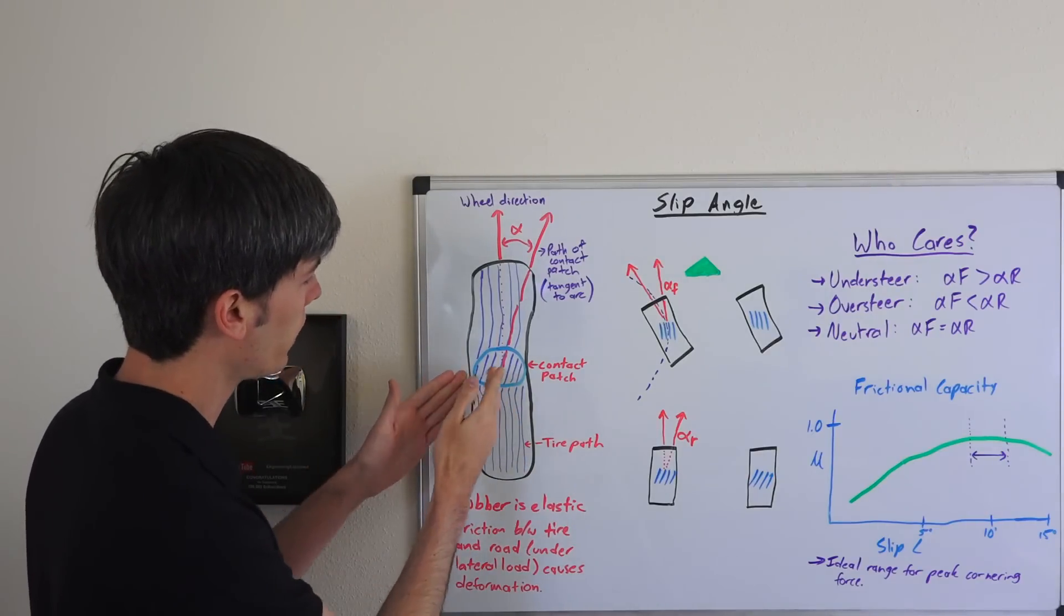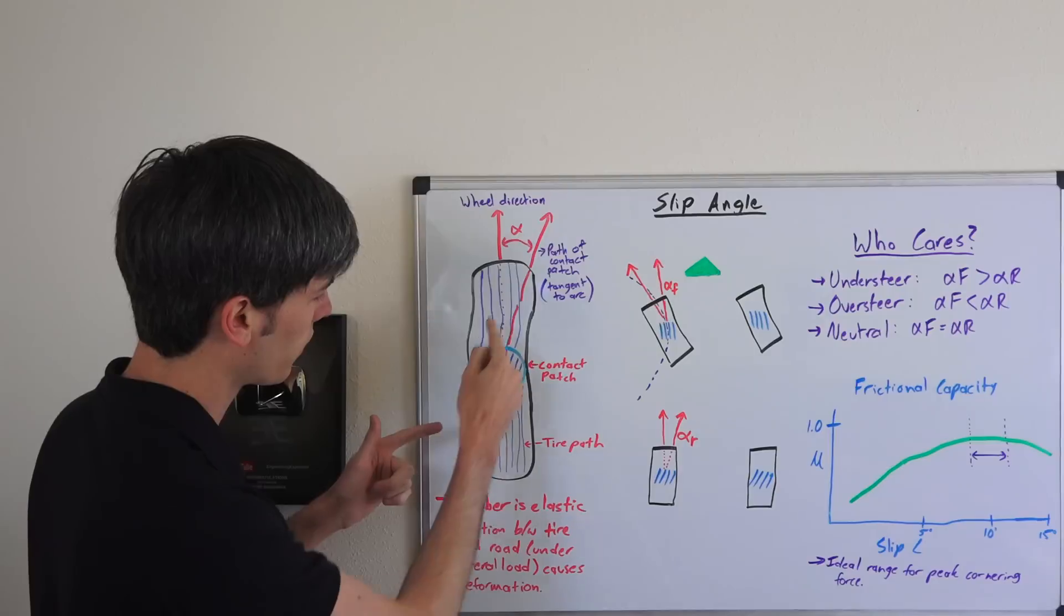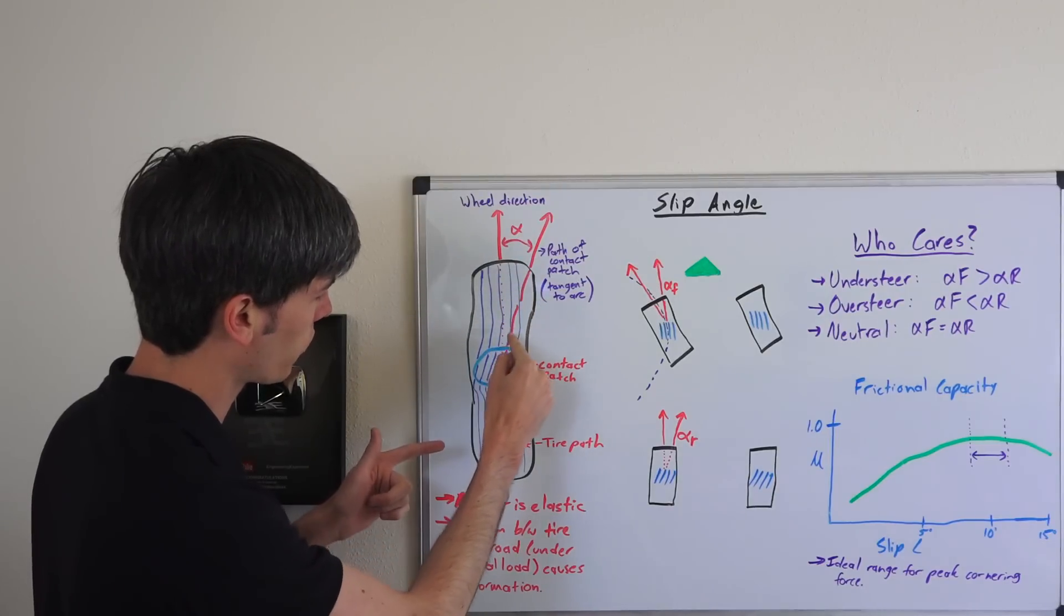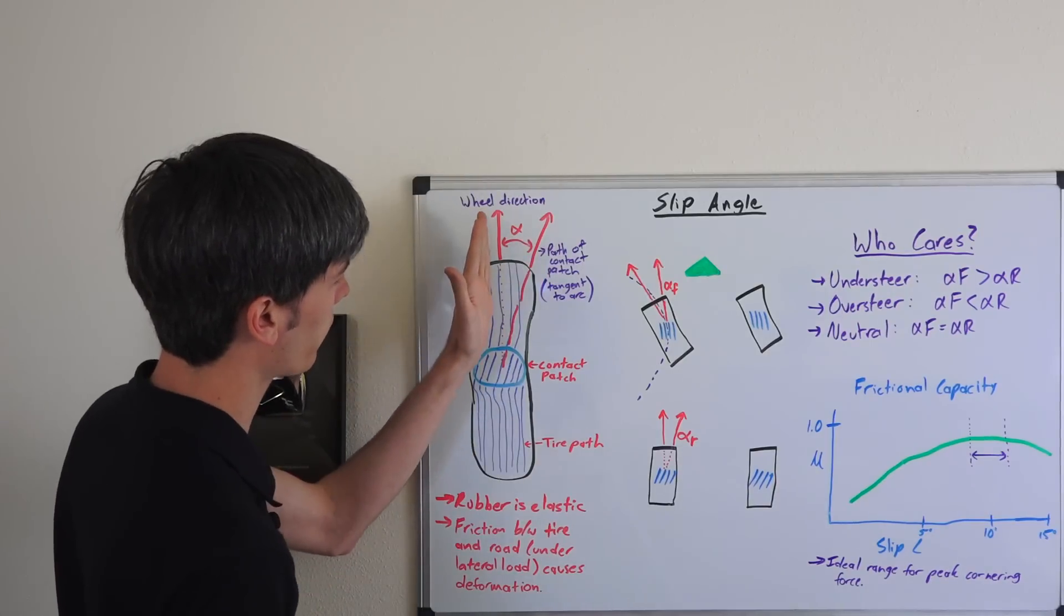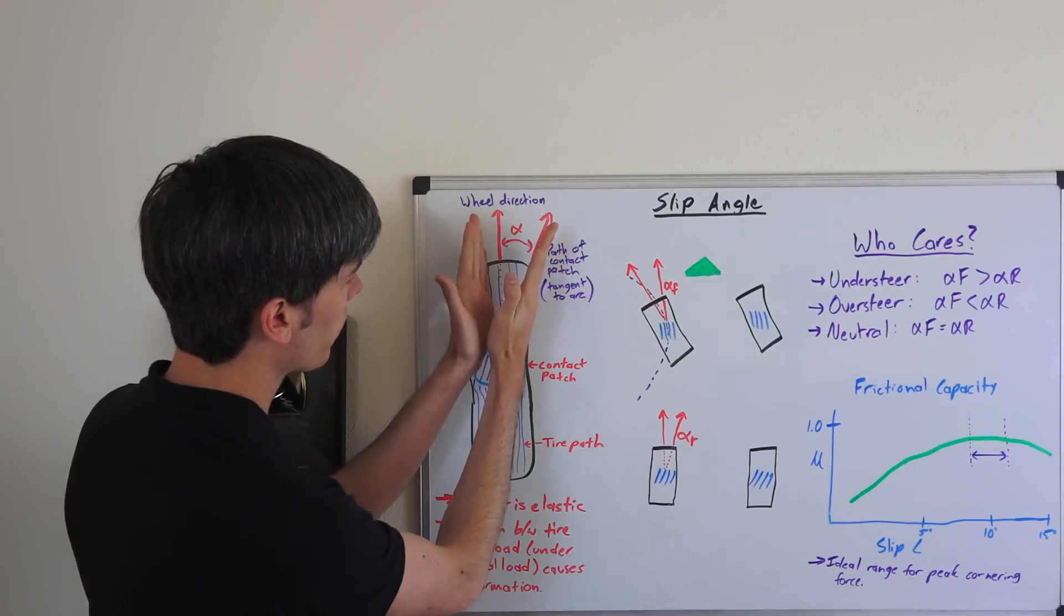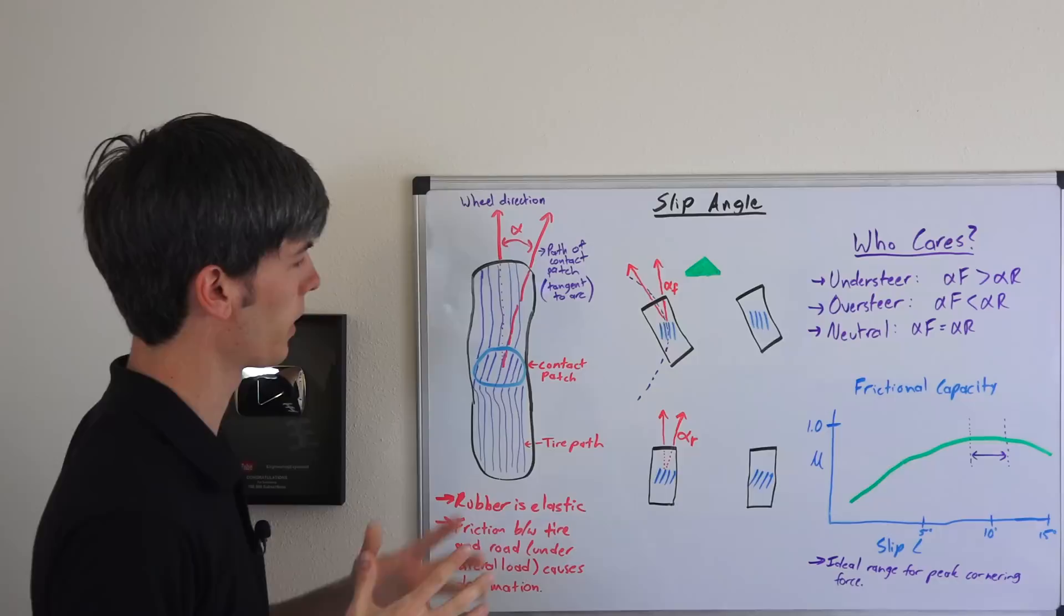So what we have here is you can see that the tire path gets distorted as it comes down to the contact patch. That's pointing at one angle and then you have the path that the wheel is traveling, and so the difference there, that angle, is the slip angle.